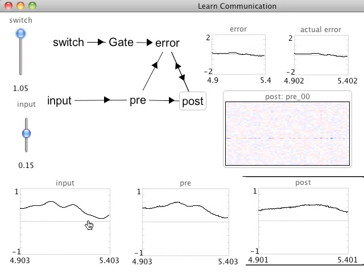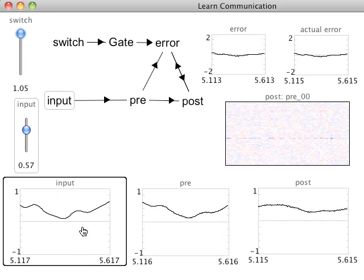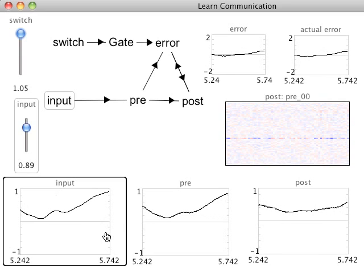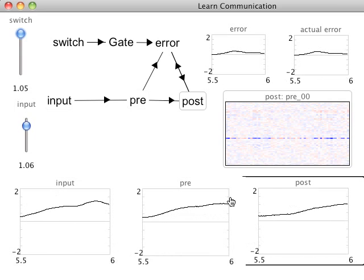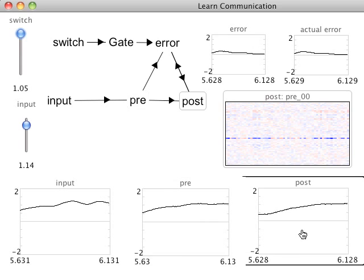Learning gets better largely because the input signal begins to go across the entire domain of possible signals, giving a better sampling of the space of possible representations to the post-synaptic population.